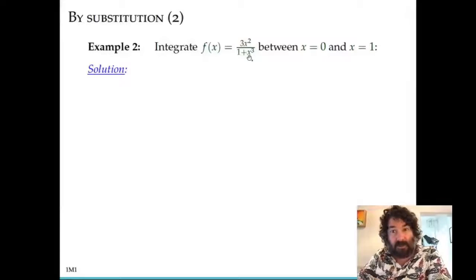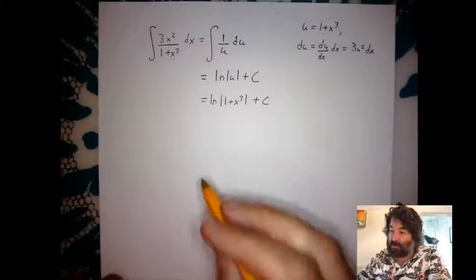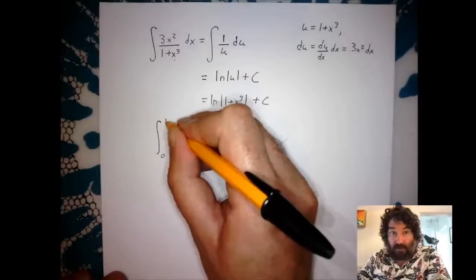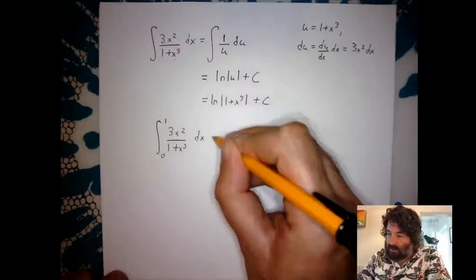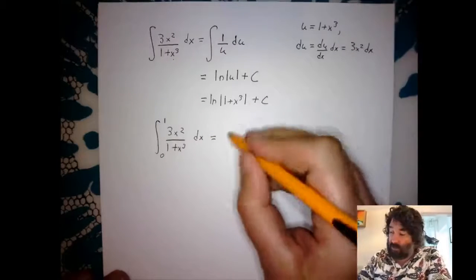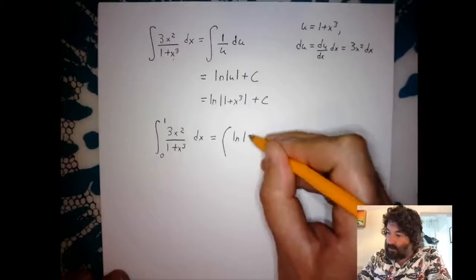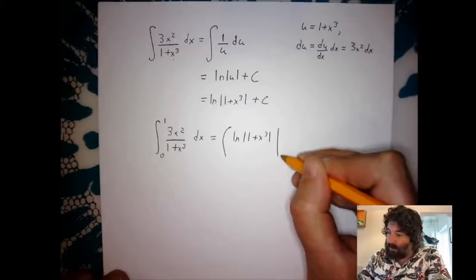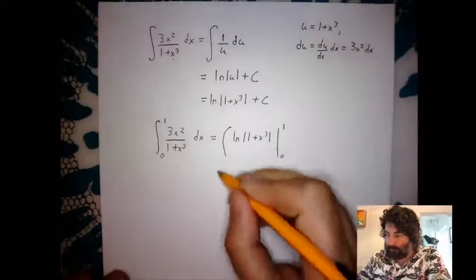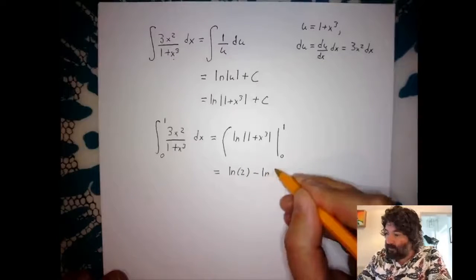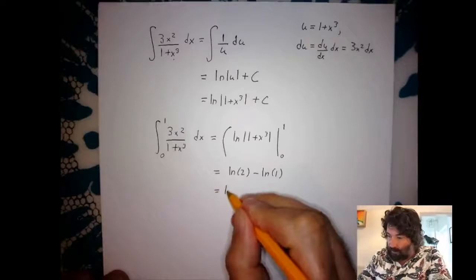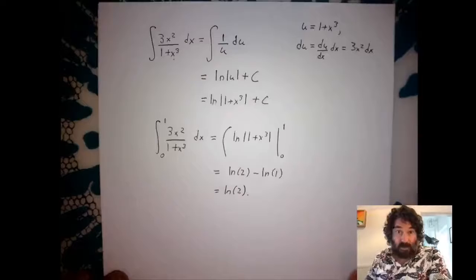However, the exercise asked for a definite integral from 0 to 1. Using the indefinite integral: natural log of |1 + x³| evaluated from x = 0 to x = 1 gives ln(2) − ln(1). Since ln(1) = 0, the definite integral equals ln 2.